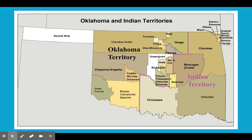The other thing is the Panhandle. The Panhandle is neutral and becomes a part of Oklahoma, and the reason why it is neutral is because of its geography.